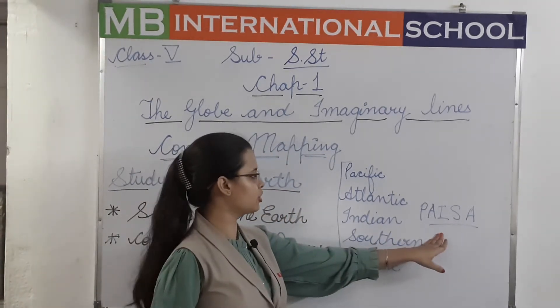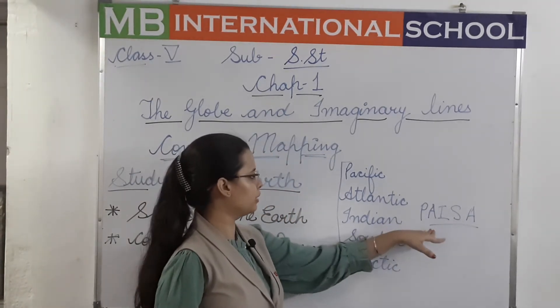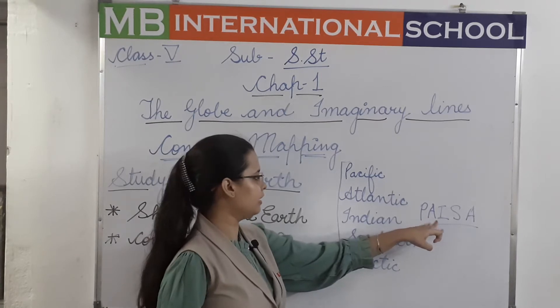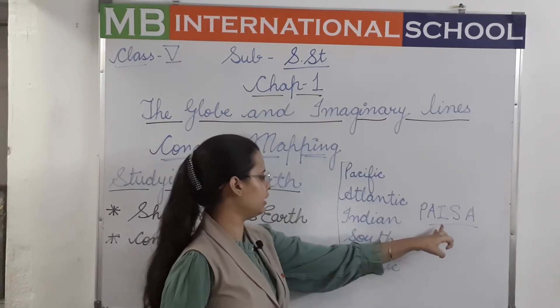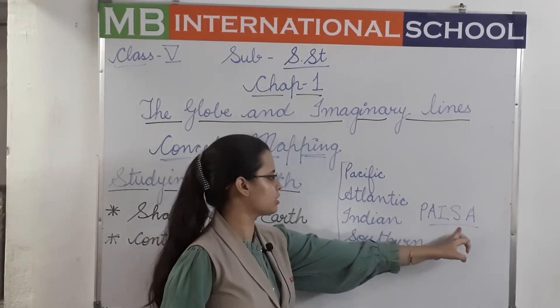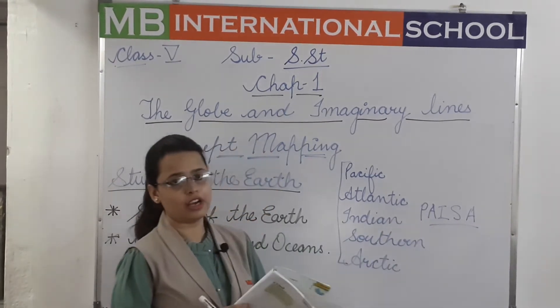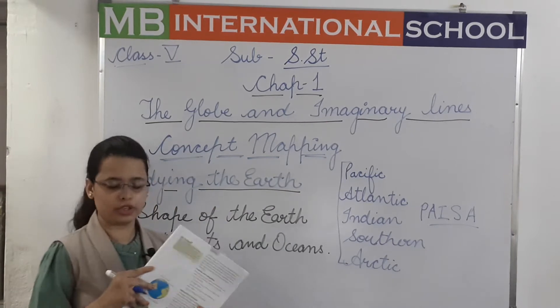To remember the five oceans easily, use the word 'PAISA': P for Pacific, A for Atlantic, I for Indian, S for Southern, and A for Arctic.